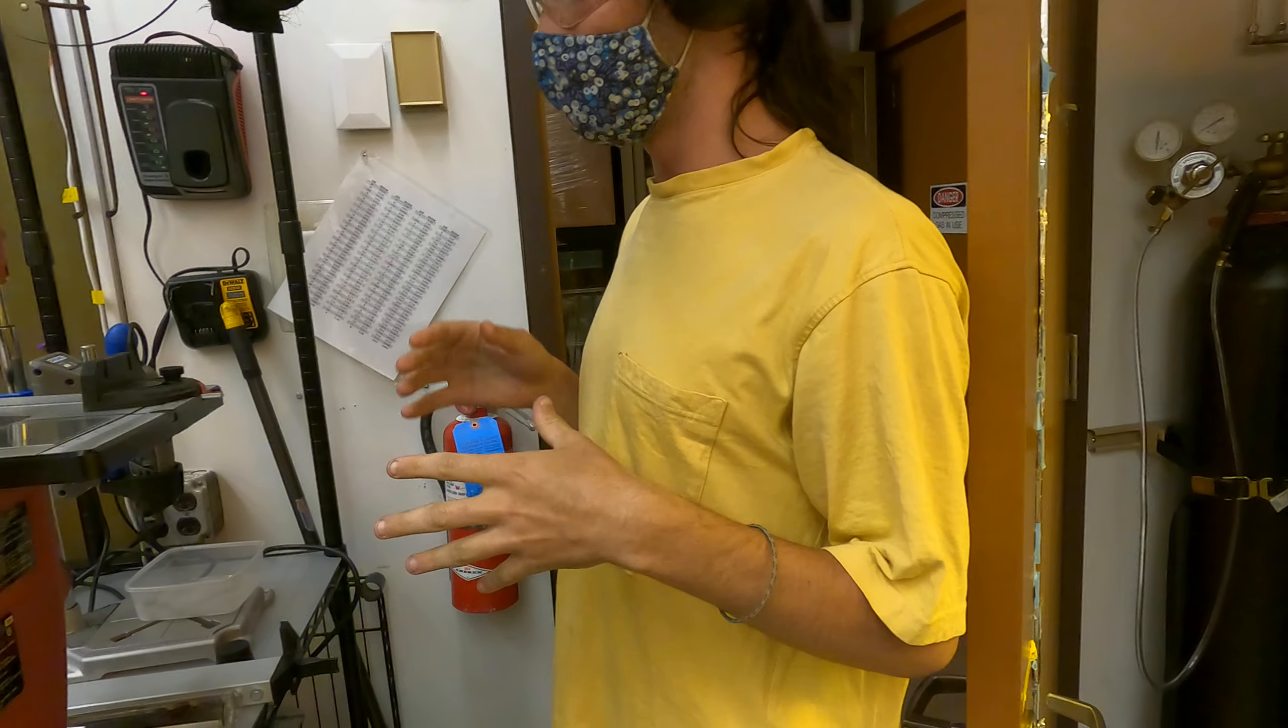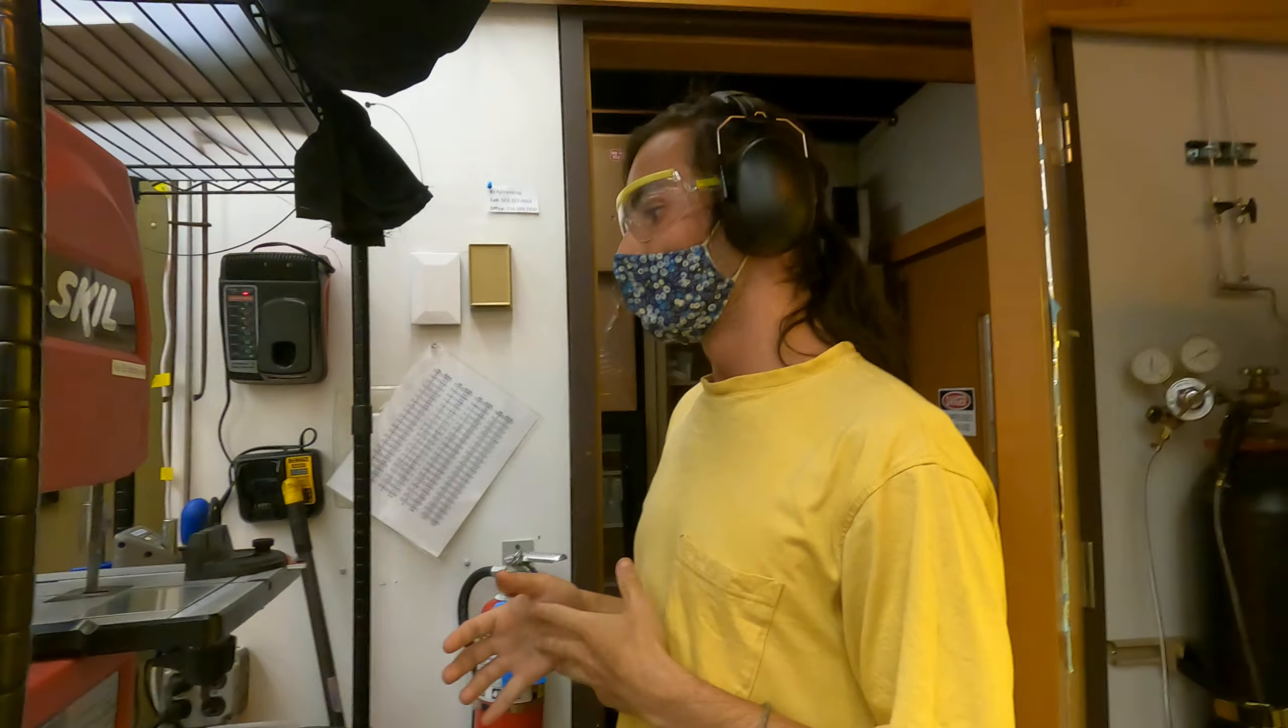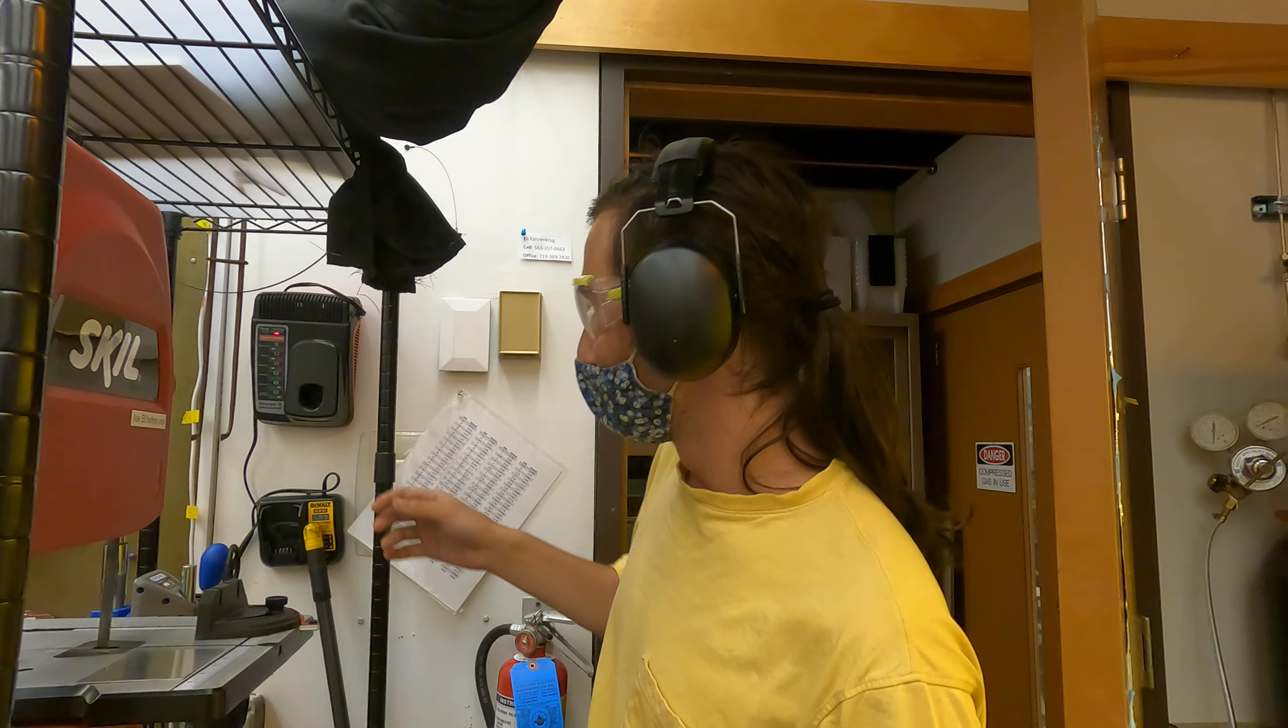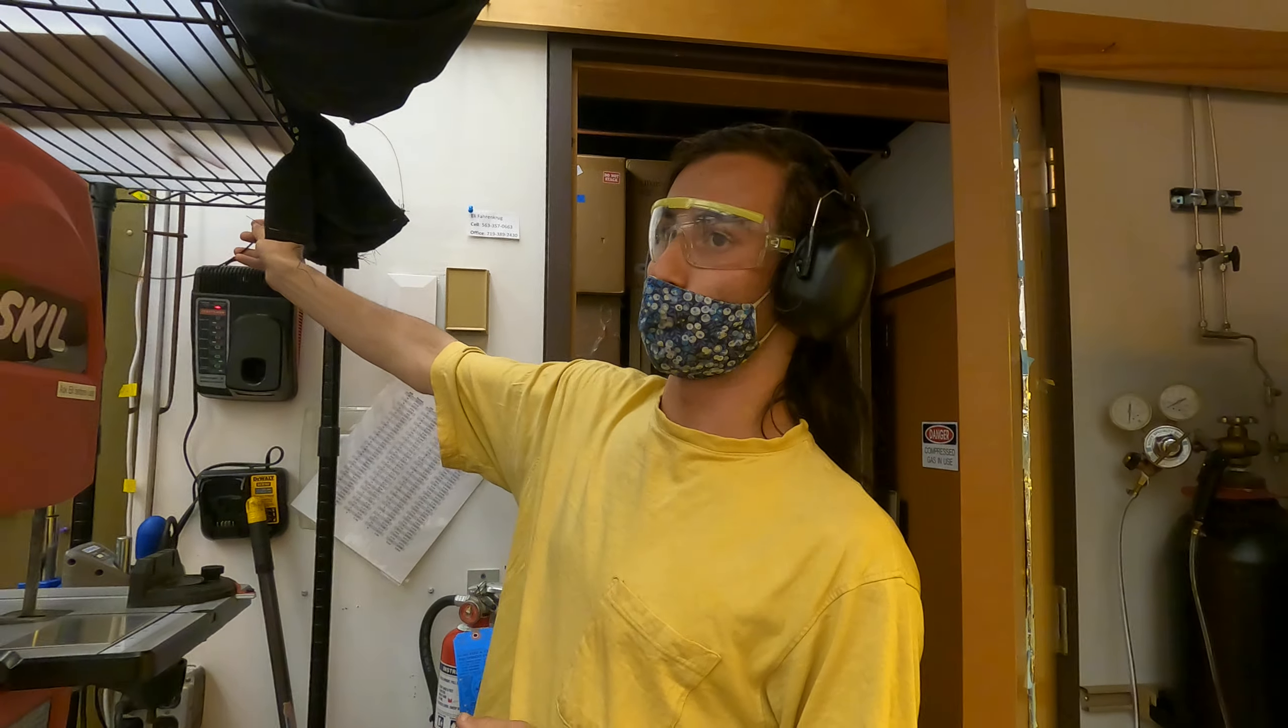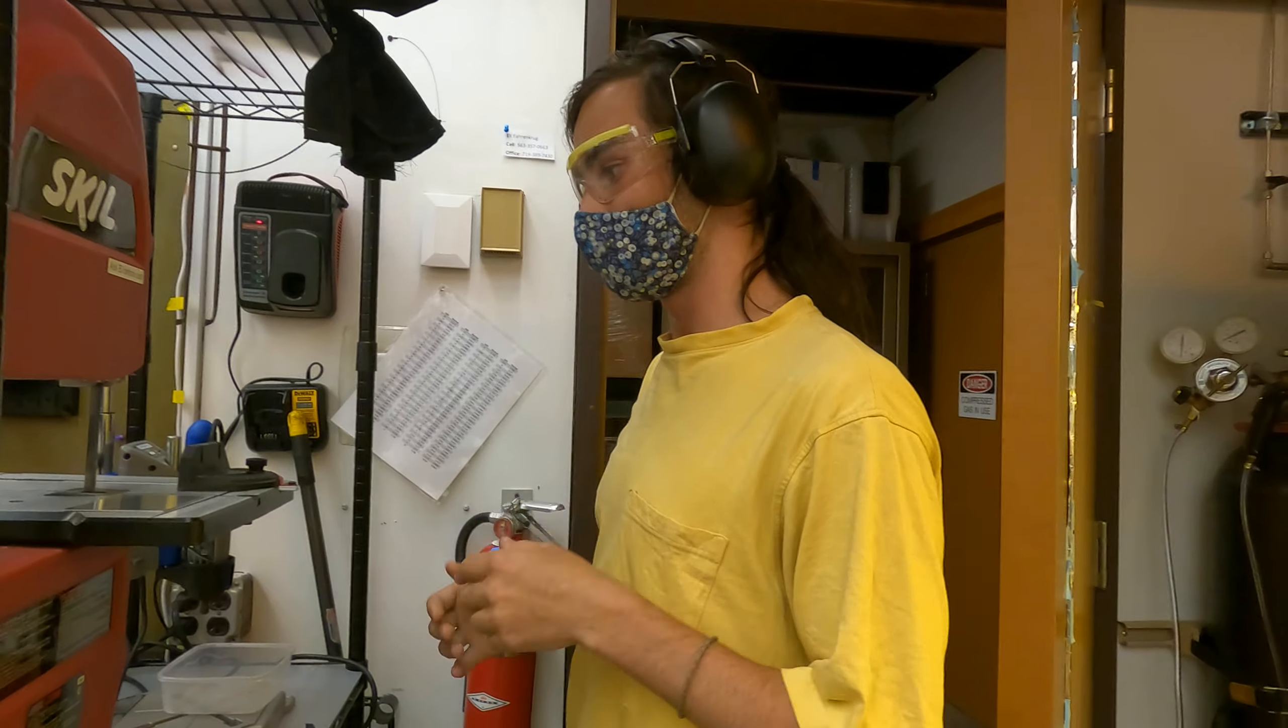There's another video on bandsaw maintenance that should be up, so make sure you check out that video as well. In terms of choosing the right blade, the smaller finer tooth blade is for metals and the wider tooth blade that sits back here is for wood and plastic.